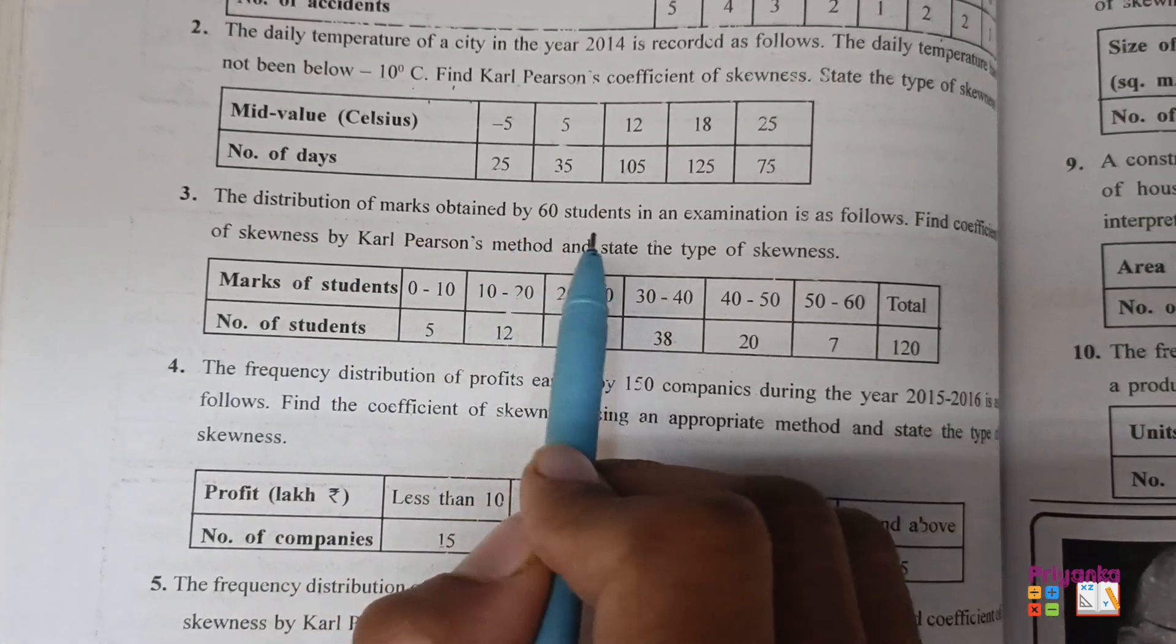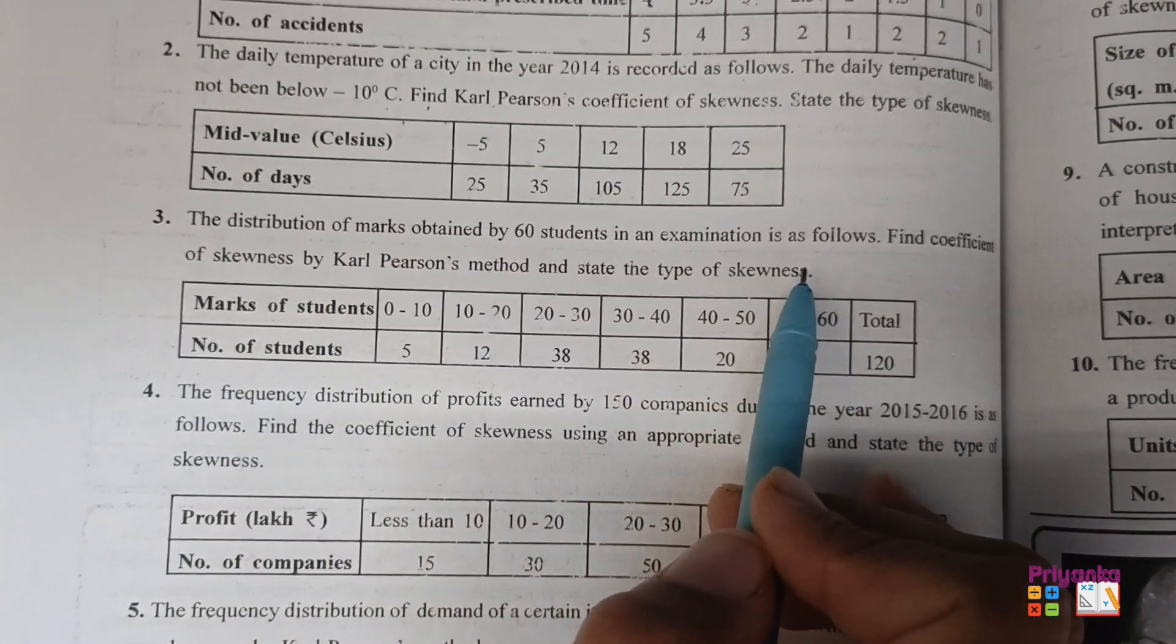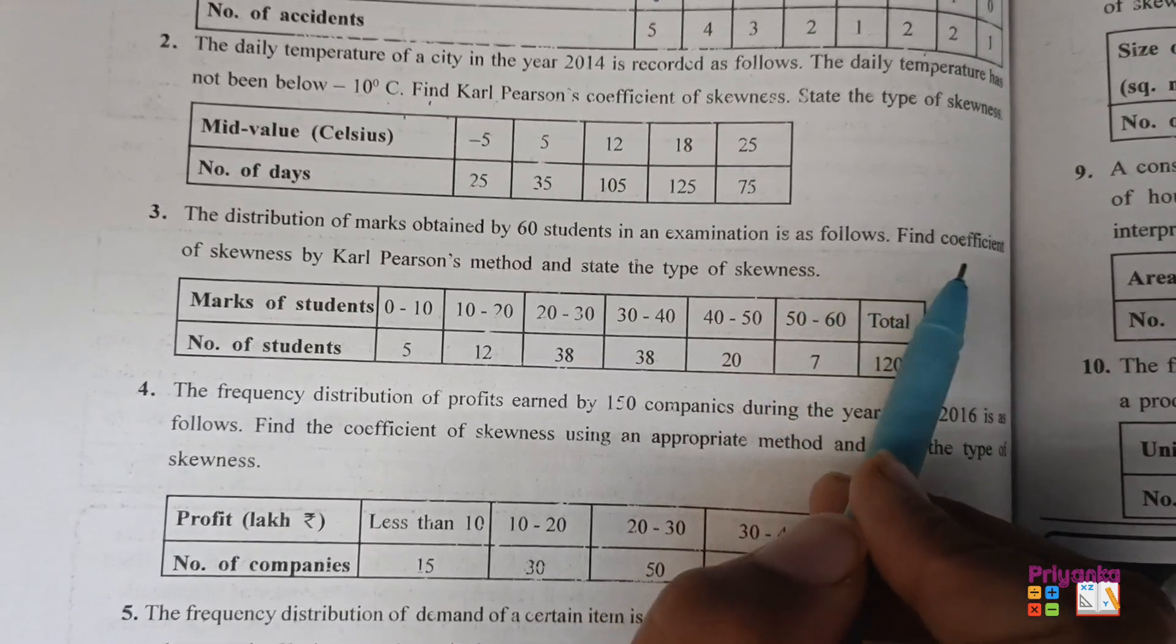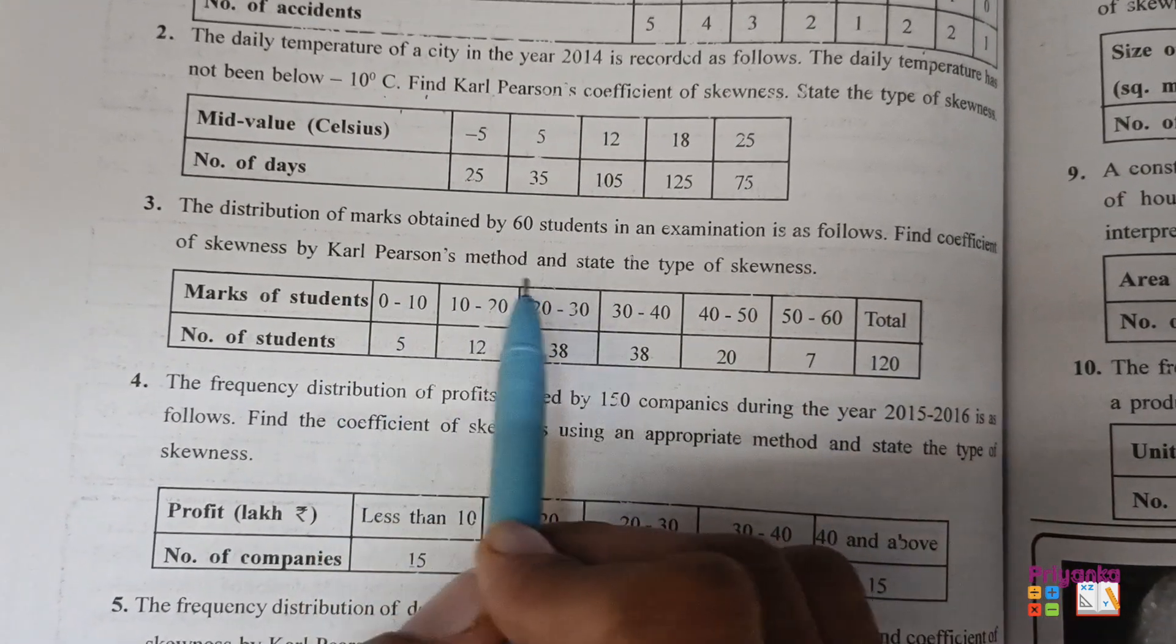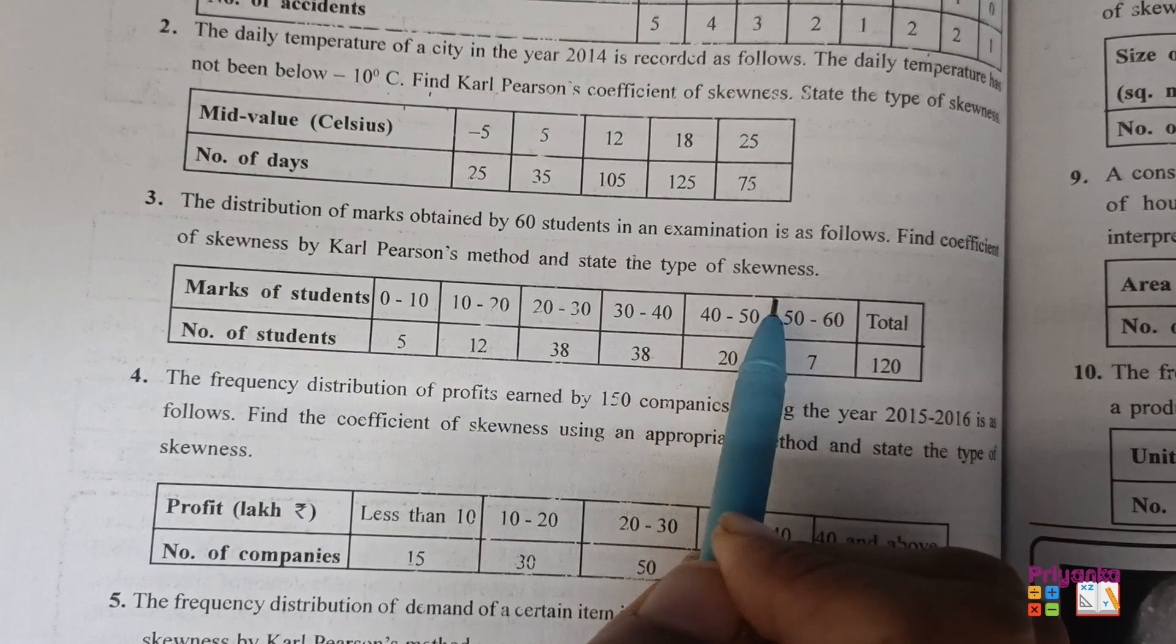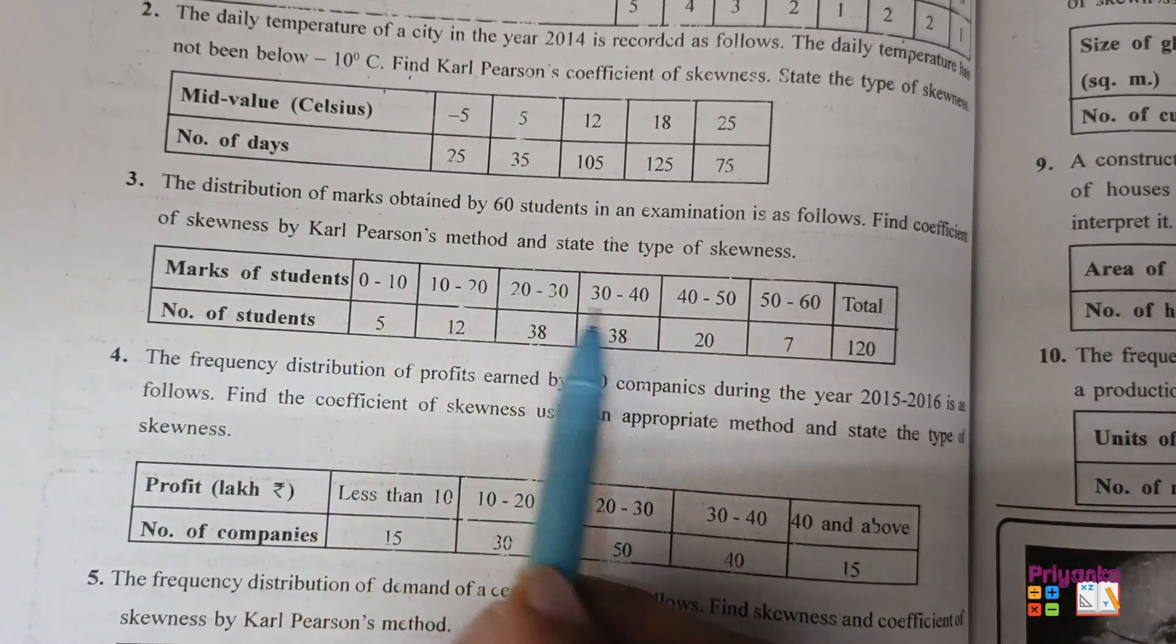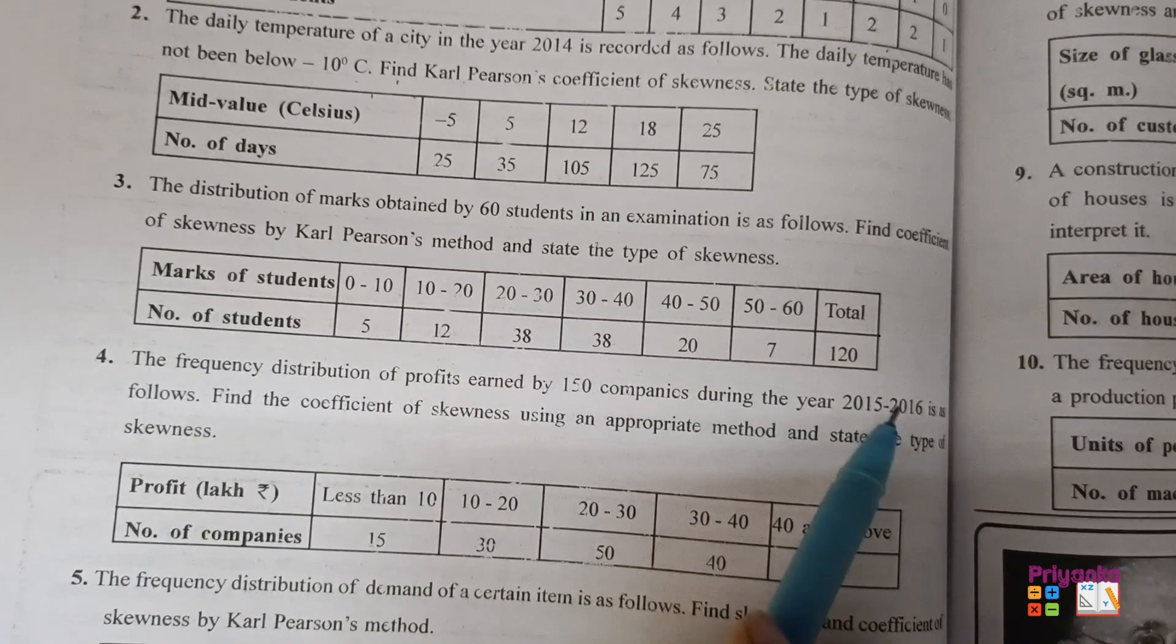The distribution of marks obtained by 60 students in examination is as follows. Find coefficient of skewness by Carl Pearson method and state the types of skewness. First check the observation and then number of students.